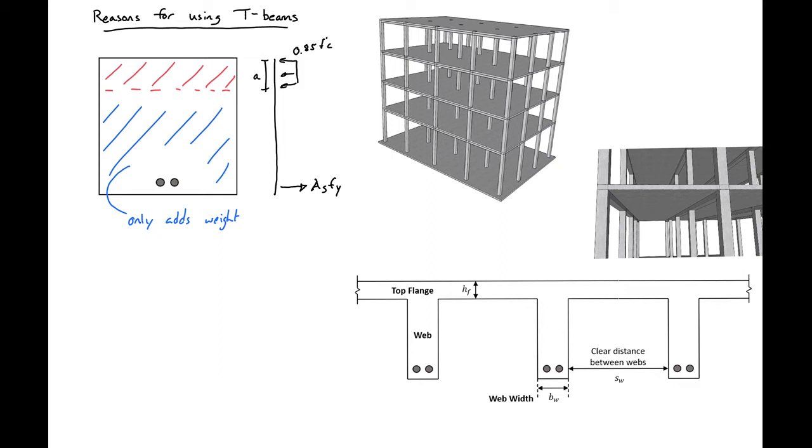So with a T-beam, what we're doing is we're keeping the portion of the concrete that's going to remain in compression and contribute to the capacity, and we're eliminating the portion of the concrete that's not contributing capacity. So all this section that I'm shading red that was concrete before, we're removing. So we're making a lighter section that's going to have a very similar capacity.